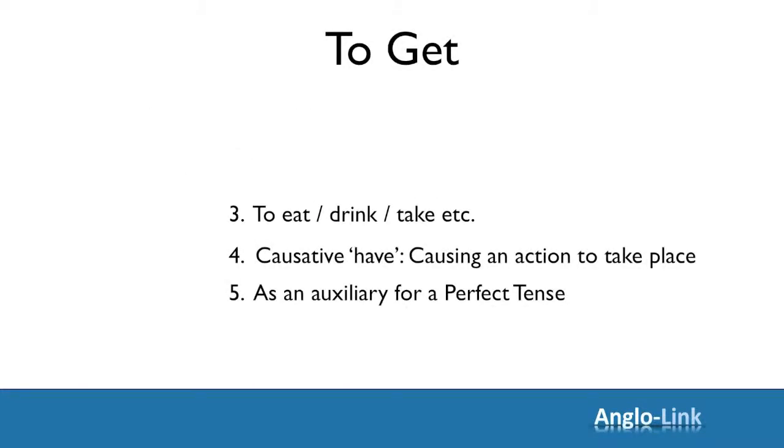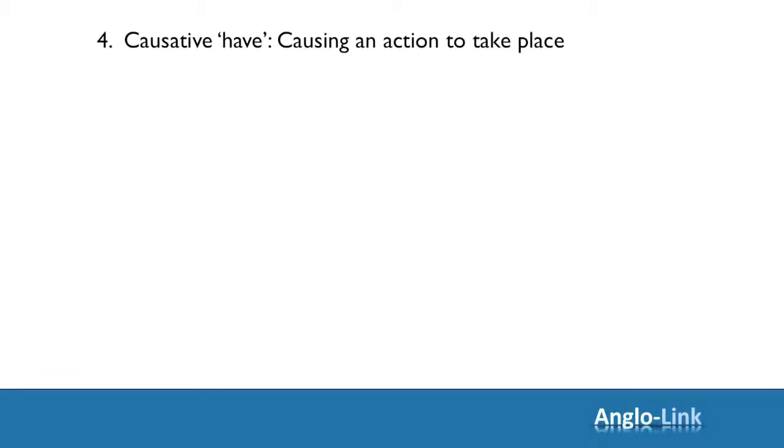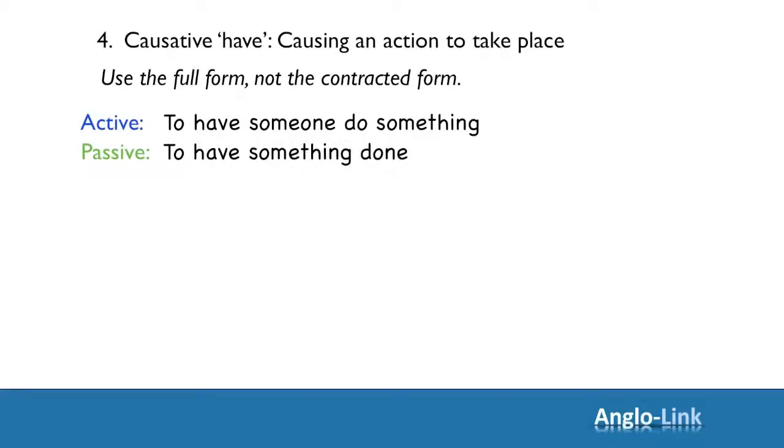Let's look at the causative HAVE now. The causative have also is the main verb and therefore you must use the full form. There are two possibilities. It can be active or passive. In the active sense, you say to have someone do something. In the passive construction, it is to have something done.